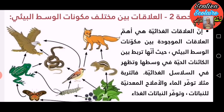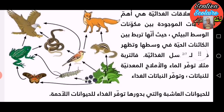الحصة الثانية: العلاقات بين مختلف مكونات الوسط البيئي. العلاقات الغذائية هي أهم العلاقات الموجودة بين مكونات الوسط البيئي، حيث أنها تربط بين الكائنات الحية في وسطها وتظهر في السلاسل الغذائية. فالتربة مثلا توفر الماء والأملاح المعدنية للنباتات، وتوفر النباتات الغذاء للحيوانات العاشبة، والتي بدورها توفر الغذاء للحيوانات اللاحمة.